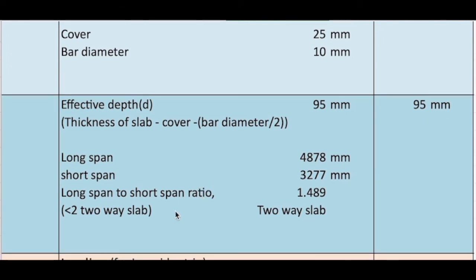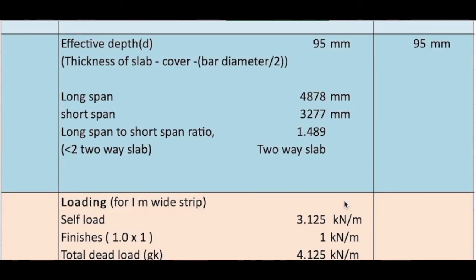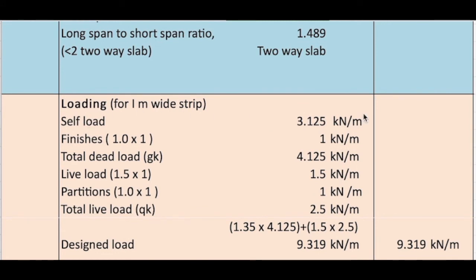So longer span 4878 in my particular case and the shorter span 3277. The ratio is 1.489. So this is a two-way slab.